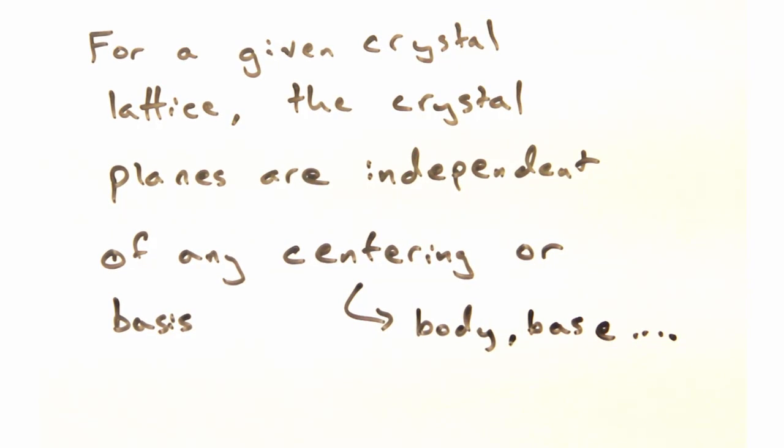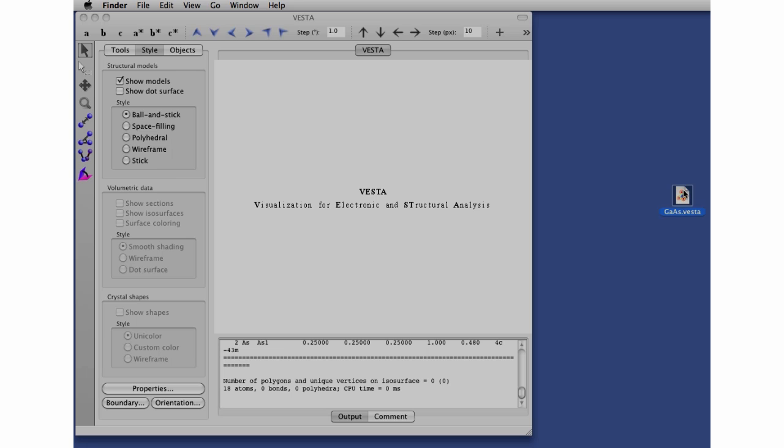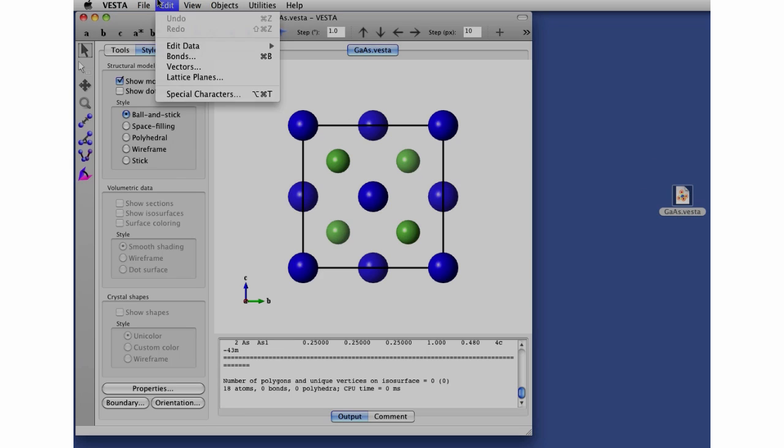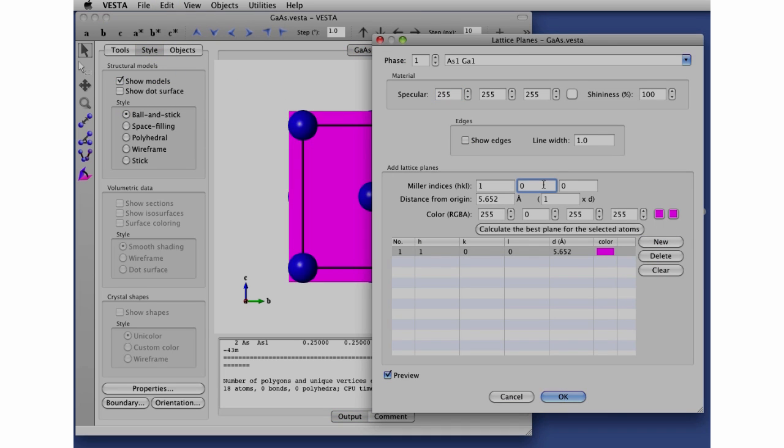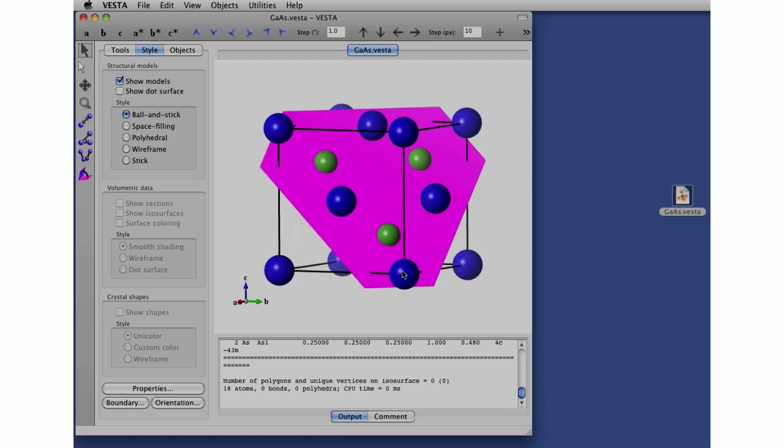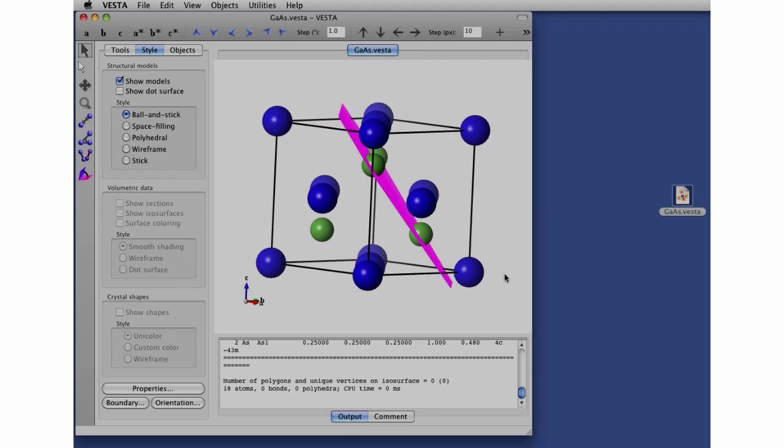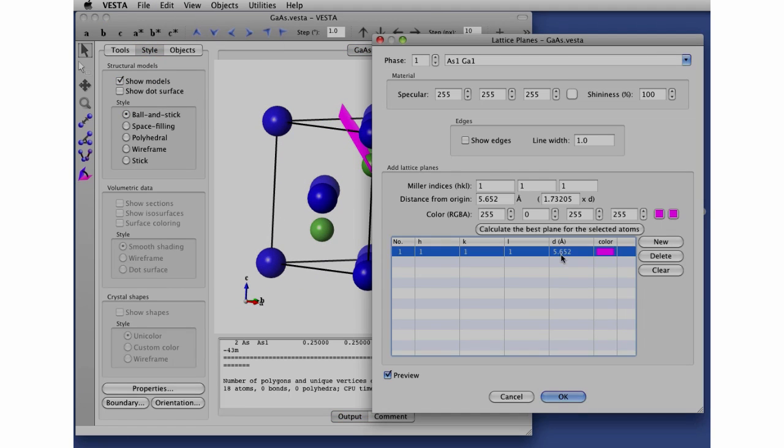Before we wrap up, let me point out how to show planes in Vesta. Here, we load in a cell. Then we click Edit Lattice Planes. Create a new one and assign the HKL values you want. So the angle looks right, but the intercept seems odd. Yeah, Vesta's a bit silly, but we can set whatever value we want. Setting it to d equals 1 is probably a good start.